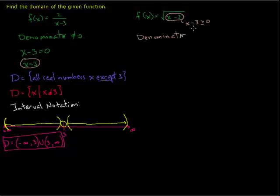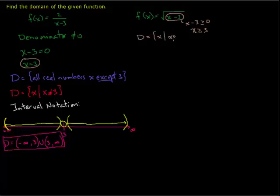So x minus 3 is greater than or equal to 0. The domain is found by finishing solving this inequality: x is greater than or equal to 3. So the domain is the set of x's such that x is greater than or equal to 3 — it's all real numbers x such that x is greater than or equal to 3.